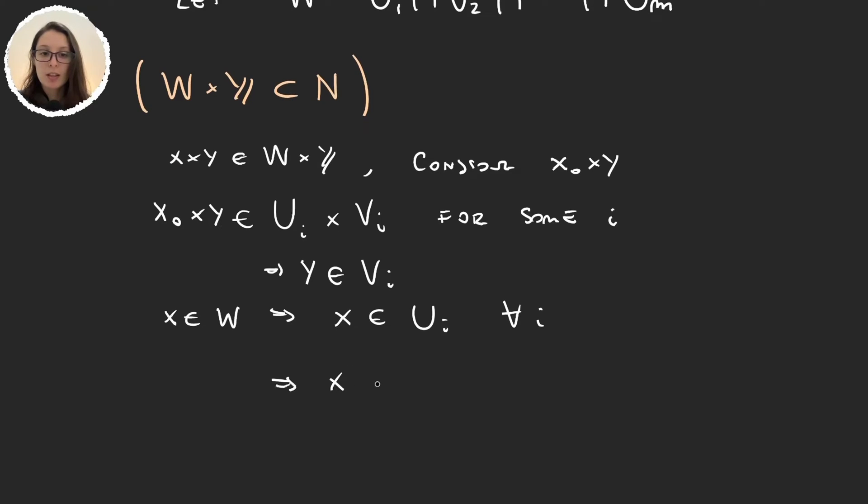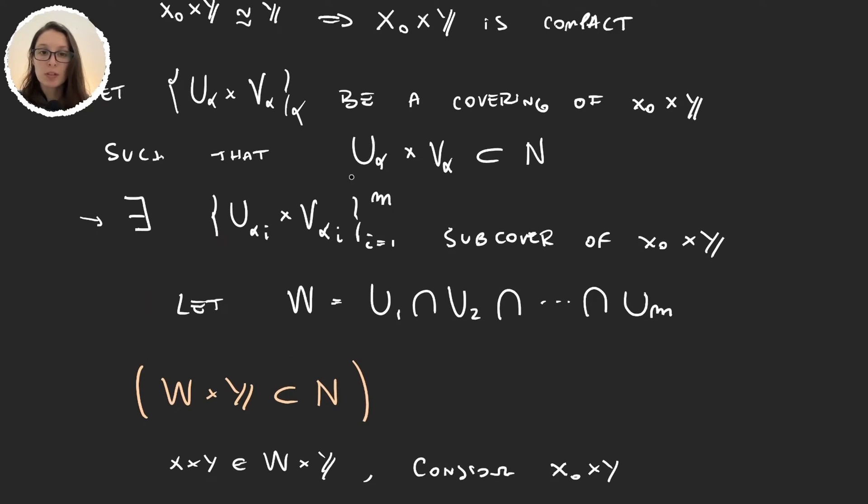so this proves that x is an element in U_i for all i's, and so x times y belongs to U_i times V_i, and all these sets, when we chose the covering,